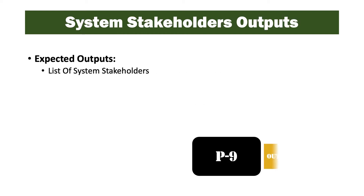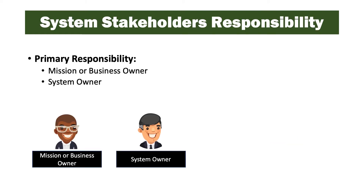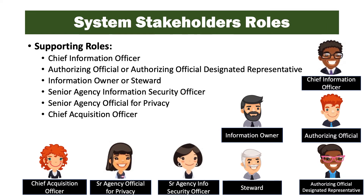Expected outputs for this task are a list of system stakeholders. The primary responsibility for this task is the mission or business owner and the system owner. Supporting roles include the chief information officer, the authorizing official or authorizing official's designated representative, information owner or information steward, senior agency information security officer, senior agency official for privacy, and the chief acquisition officer.